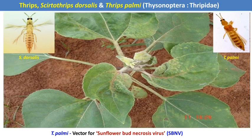The next pest is thrips. There are two species: Scirtothrips dorsalis and Thrips palmi. Thrips is a sucking pest. In the case of sunflower, it attacks from the seedling stage up to the harvesting stage. Both nymphs and adult are the damaging stages. They scrape the epidermal layers of the leaves and suck the oozing cell sap, causing infested leaves to show silvery white patches or silvery lines on the surface. This thrips also acts as a vector for Sunflower Bud Necrosis Virus.